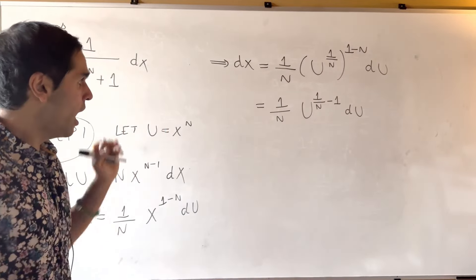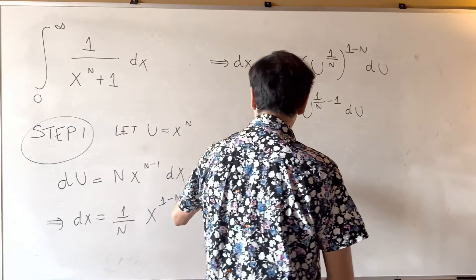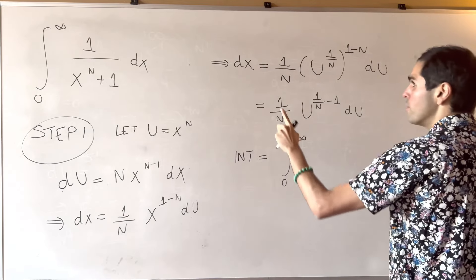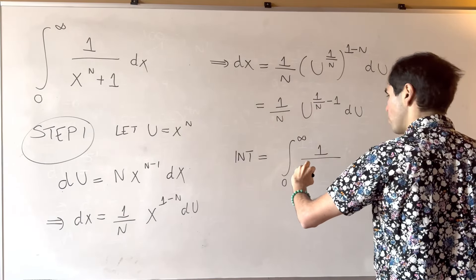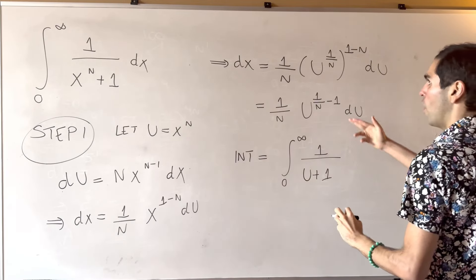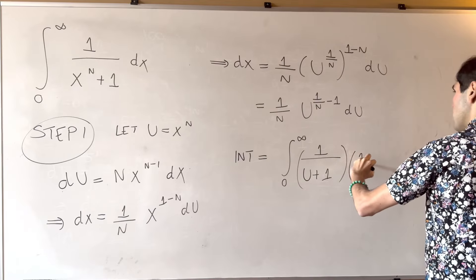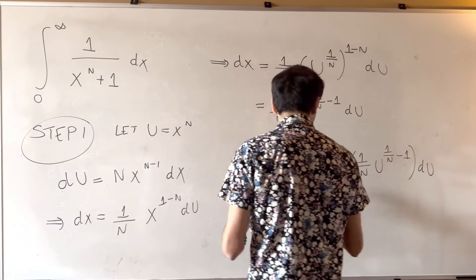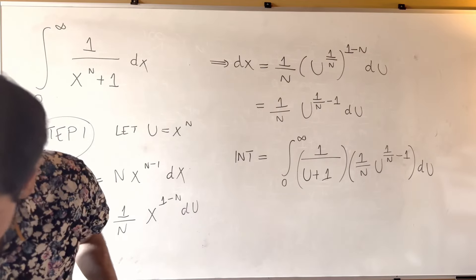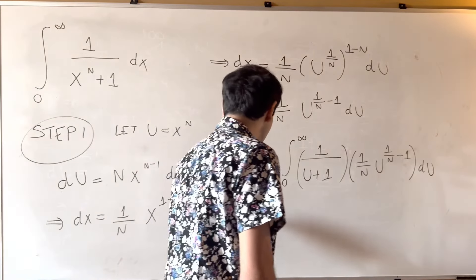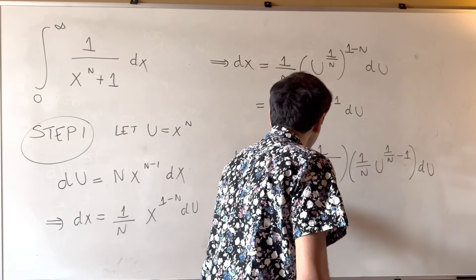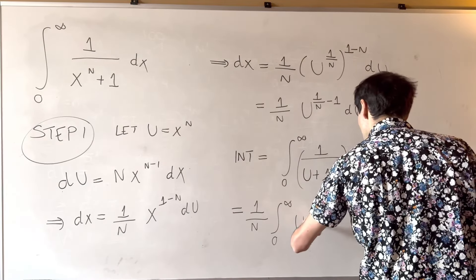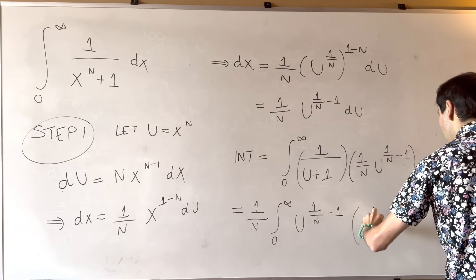Therefore, after this u-substitution, our integral just becomes the integral from 0 to infinity of 1 over n times 1 over u plus 1, times u to the 1 over n minus 1 du. Cleaning this up, what we end up with is 1 over n times the integral from 0 to infinity of u to the 1 over n minus 1 times 1 over 1 plus u du.